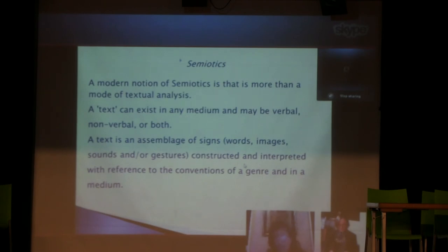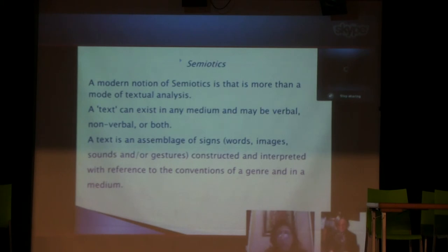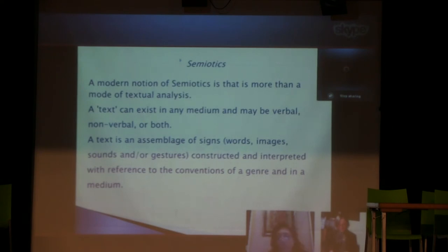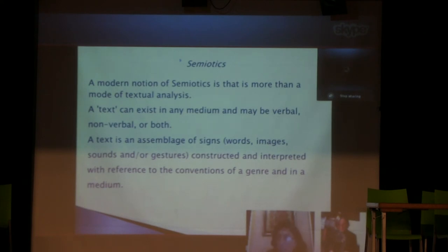Another important school also based on structuralism is semiotics. A modern notion of semiotics understands it as more than a mode of textual analysis: a text can exist in any medium and may be verbal, non-verbal, or both. Semiotics has a very inclusive notion of text and sign. For semioticians, a text is an assemblage of signs — including words, images, sounds, and gestures — constructed and interpreted with reference to the conventions of a genre and medium. This makes it a very useful template for analyzing experimental poems.